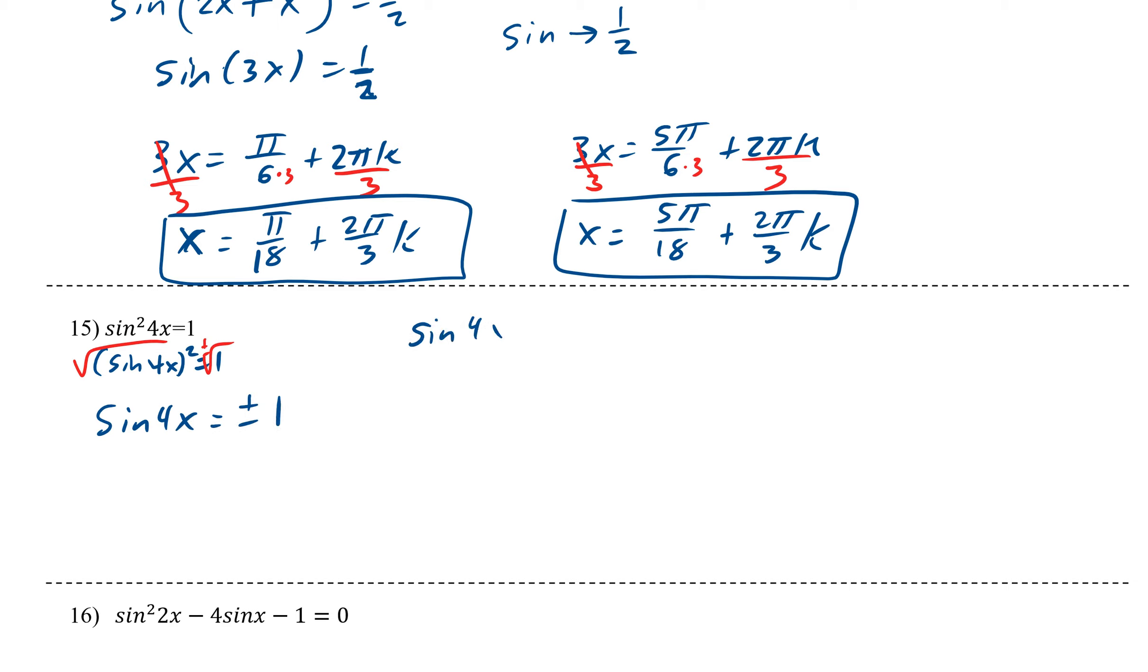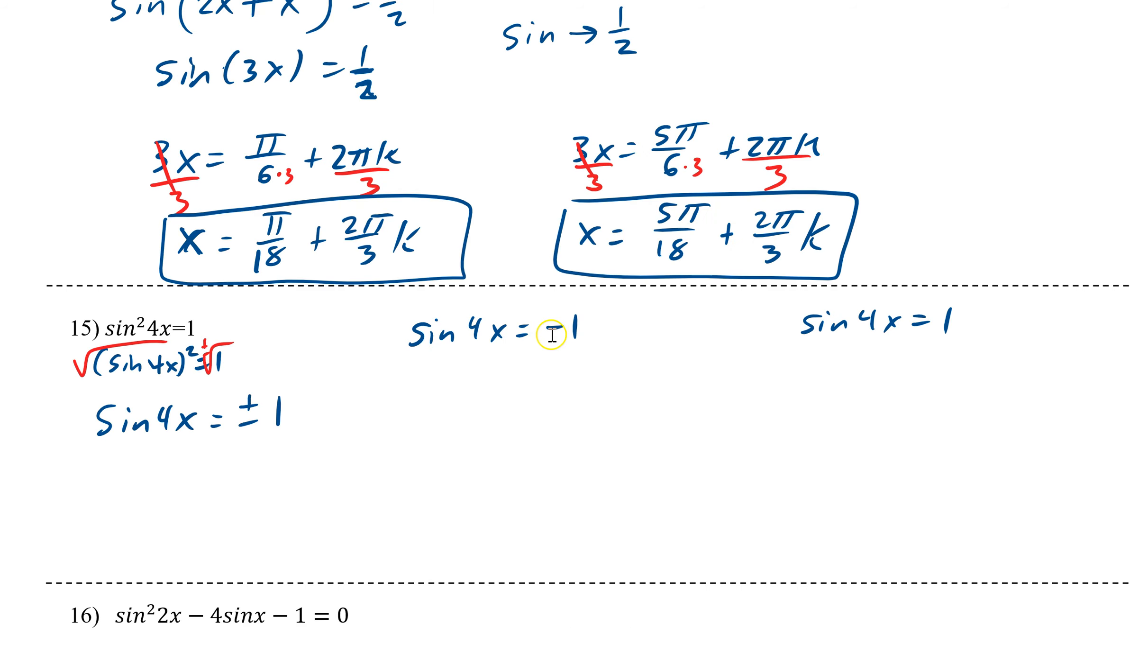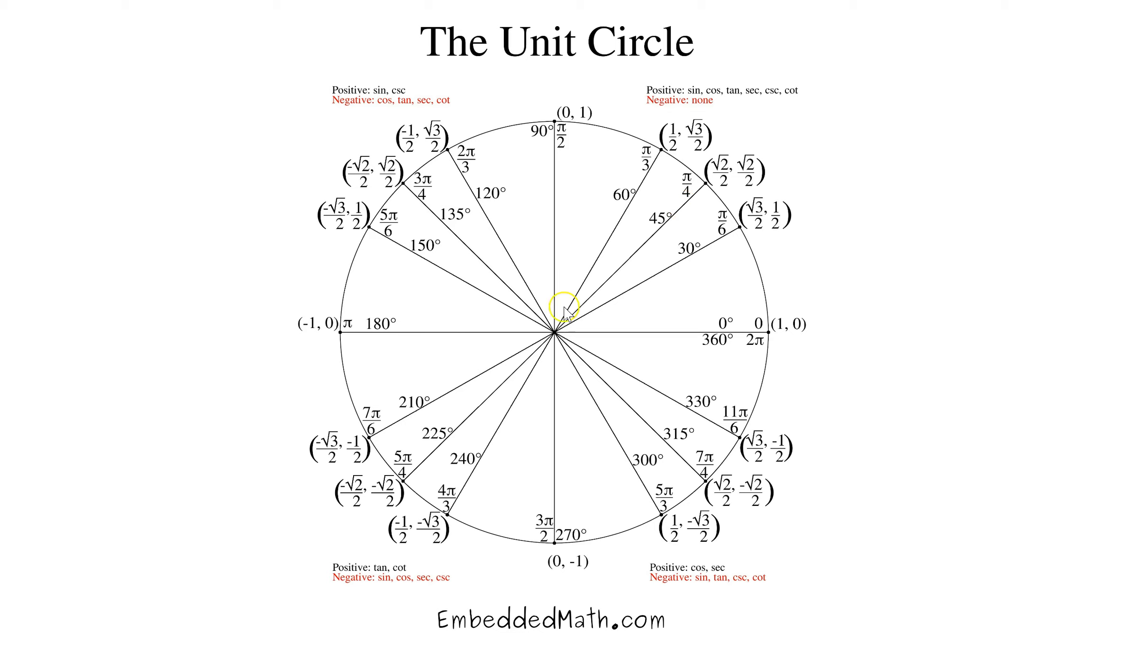We have our sine of 4x equals negative 1, and our sine of 4x equals 1. So again, we look at our unit circle to verify when does sine equal negative 1. Sine is the y. So right here at 3π over 2. And sine equals positive 1 at π over 2. That's that situation where we had before.